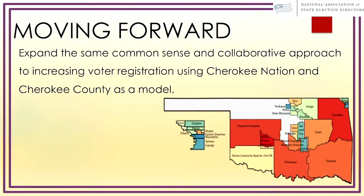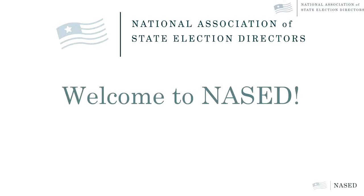Moving forward, our goal is to adapt what we've done with the Cherokee Nation and take that model to the other 38 tribes in the state of Oklahoma. As a county election official I didn't have much platform for that, but I do now and I'm going to use it. I've been in this position for a little over a year, so I've been keeping my nose above water, but this is coming soon. We hope it will spread across the state and improve our voting numbers all over.